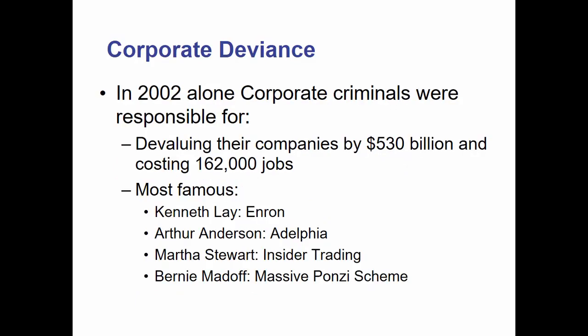In 2002 alone — and keep in mind that is relatively dated — corporate criminals were responsible for devaluing their companies by $53 billion and costing about 162,000 jobs. When you devalue a company, you pay less in taxes, which harms the economy and government, costs people employment, takes away their income. People get sick, people don't have health insurance, people die. These are real consequences. Some of the more famous people who committed acts of corporate deviance were Kenneth Lay and the Enron scandal, where they effectively stole a lot of money, drove the company out of business, and ran away.